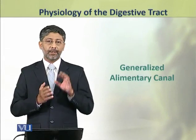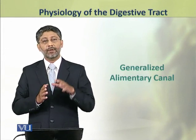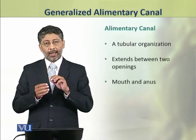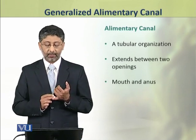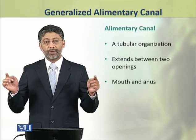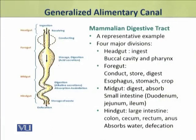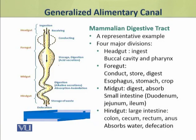Dear students, in this topic we shall discuss the structure of a generalized alimentary canal. An alimentary canal has a tubular organization. This tube extends between two openings: mouth and anus. We can take the mammalian digestive tract as a representative example of an alimentary canal, which can be compared to all other animals.